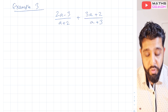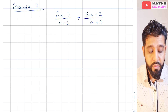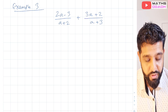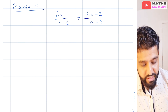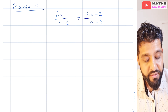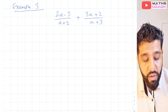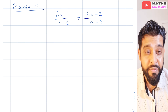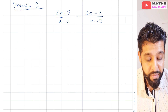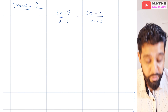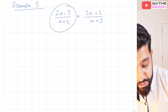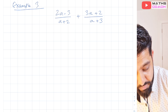Now we move on to example number 3. Perhaps you can pause the video and try this one yourself, then press play when you're ready to go through the answer. We have (2a minus 3) over (a plus 2) plus (3a plus 2) over (a plus 3). Previously we found the lowest common multiple, but in this case we will revert to the method where we multiply by each other's denominator.